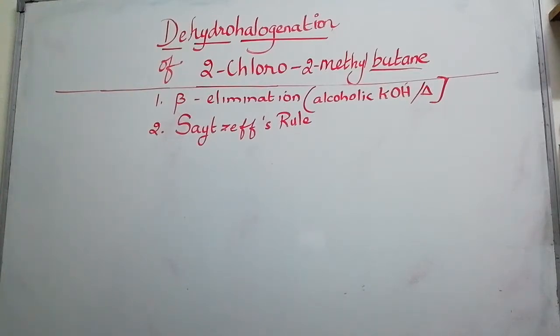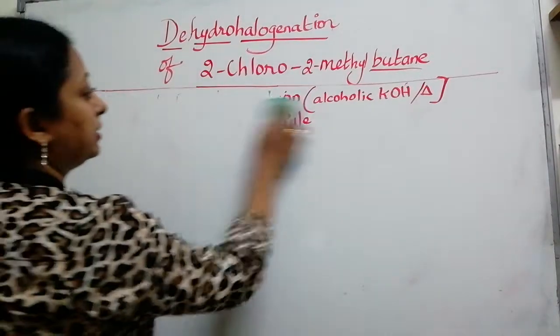D means removal, hydro means hydrogen and halogen, both hydrogen and halogen is removed from this compound so that you get an alkene. So let us move on to getting the products.